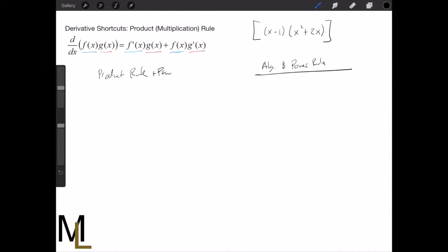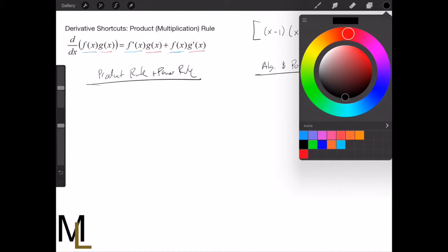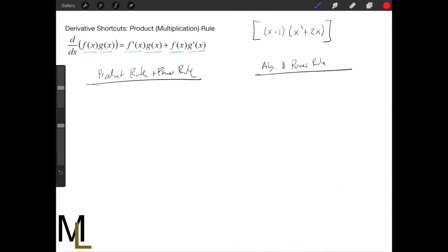So if we just do algebra, what I need to do is simplify this. We're going to multiply this out. The result is going to be x³ + 2x² - x² - 2x.